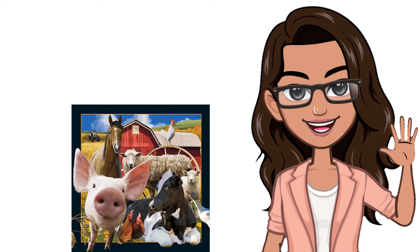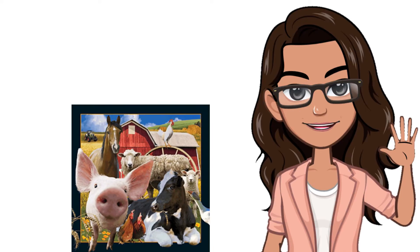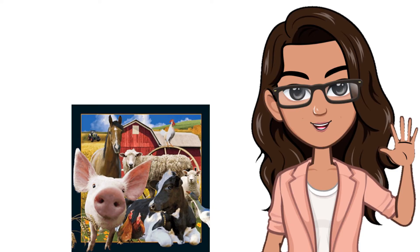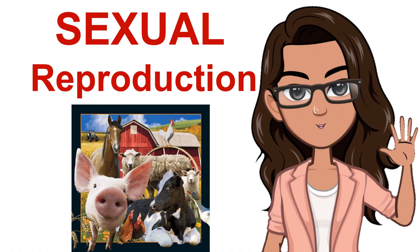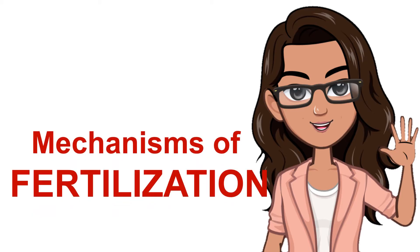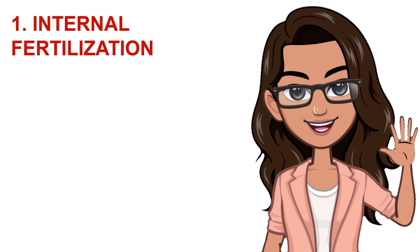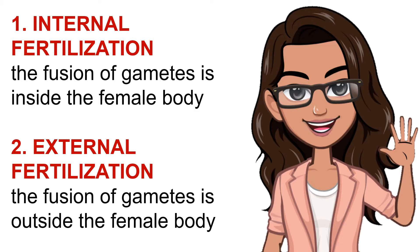Organisms are diverse and unique, with equally unique features that help them survive in their environment. These features are tailored to the animal's environment, size, habitat, and many more factors. One unique feature is the way organisms undergo fertilization. Let's discuss the mechanisms of fertilization. There are two types: internal and external. Internal fertilization occurs when the fusion of gametes takes place inside the female body, while external fertilization is the opposite — fusion of gametes outside the female body.